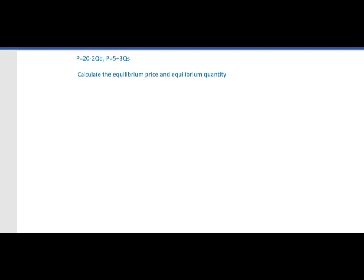To calculate the equilibrium price and equilibrium quantity, first we will rewrite this equation. P equal to 20 minus 2Qd, so 2Qd equal to 20 minus P, therefore Qd equal to 20 minus P divided by 2, equal to 10 minus 0.5P.